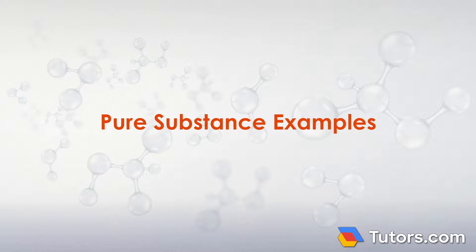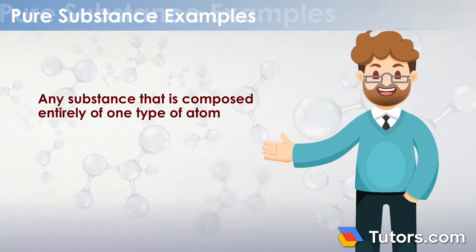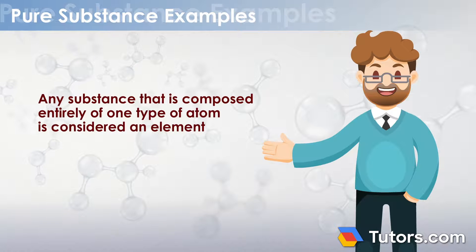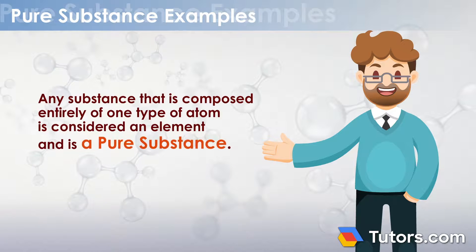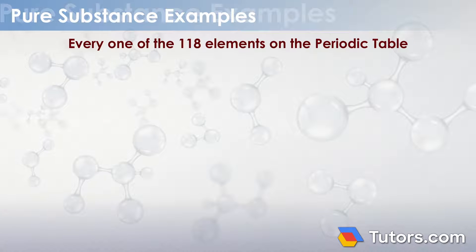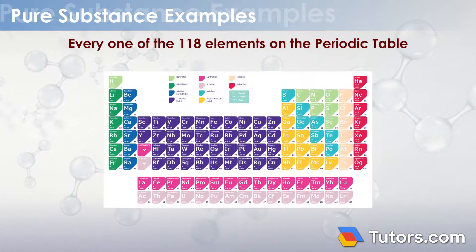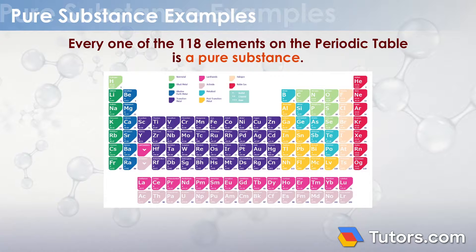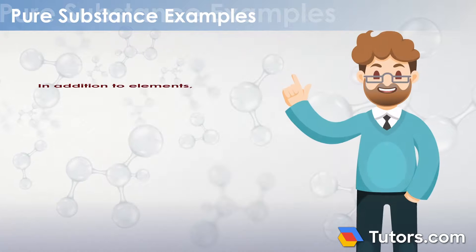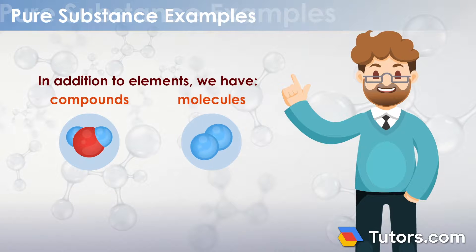Pure Substance Examples: Any substance composed entirely of one type of atom is considered an element and is a pure substance. Every one of the 118 elements on the periodic table is a pure substance. In addition to elements, we have compounds and molecules.